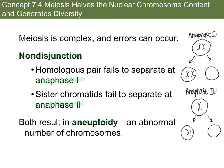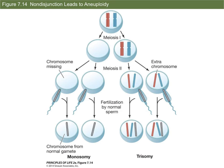Aneuploidy is an abnormal number of chromosomes — either too many or not enough. This occurs when a normal gamete fuses with an abnormal gamete that has either an extra chromosome or a missing chromosome, producing zygotes with too few or too many chromosomes. If the zygote has an extra chromosome, we call that a trisomy; if it's missing one, we call that a monosomy. Each set should have two — one from mom and one from dad. If they get two from one parent and one from the other, they end up with three, a trisomy. If they only get one from one parent and none from the other, that's a monosomy.